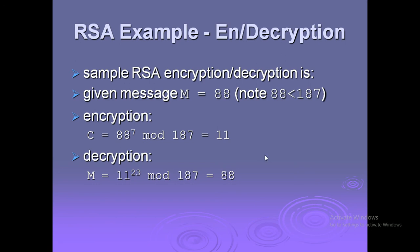Encryption and decryption example: given message M = 88, where 88 < n = 187. Encryption: C = 88^7 mod 187 = 11. This is the ciphertext corresponding to plaintext 88. Decryption: M = 11^23 mod 187 = 88, recovering the original message.